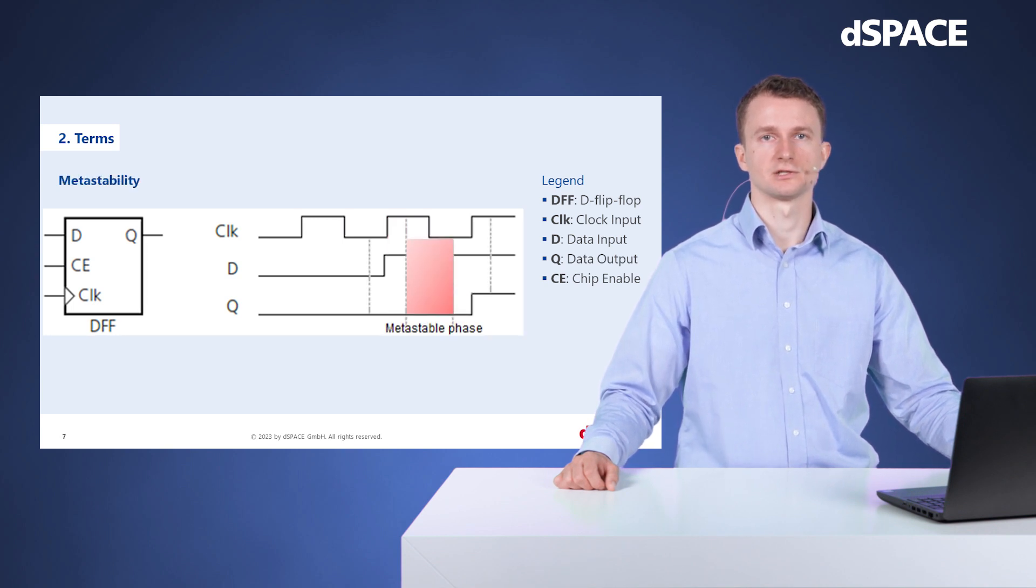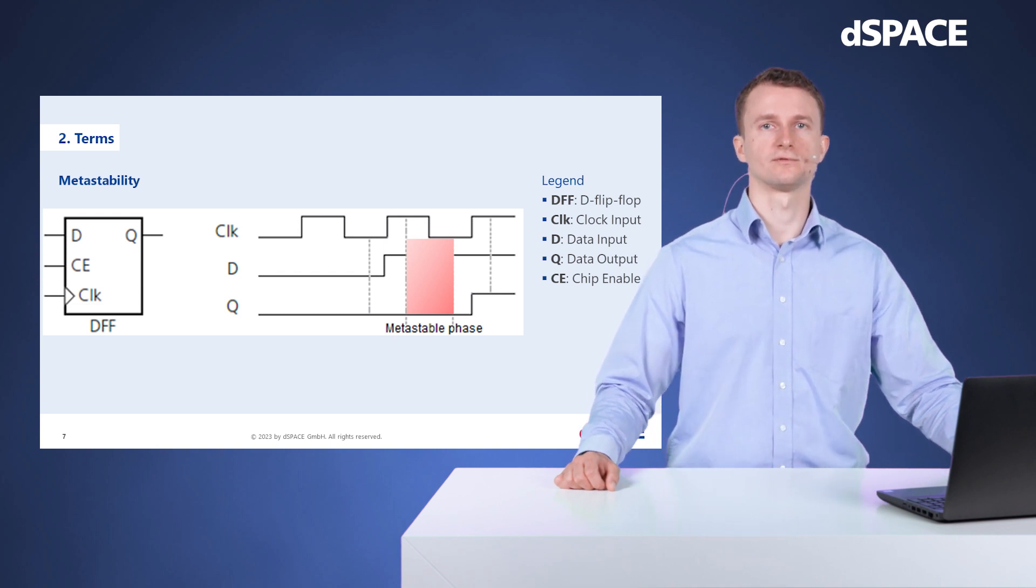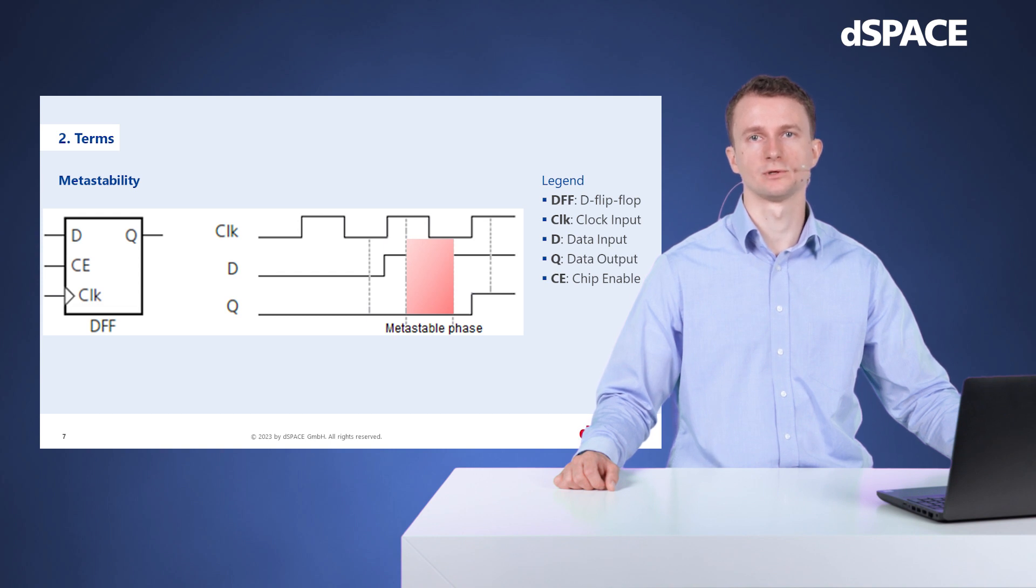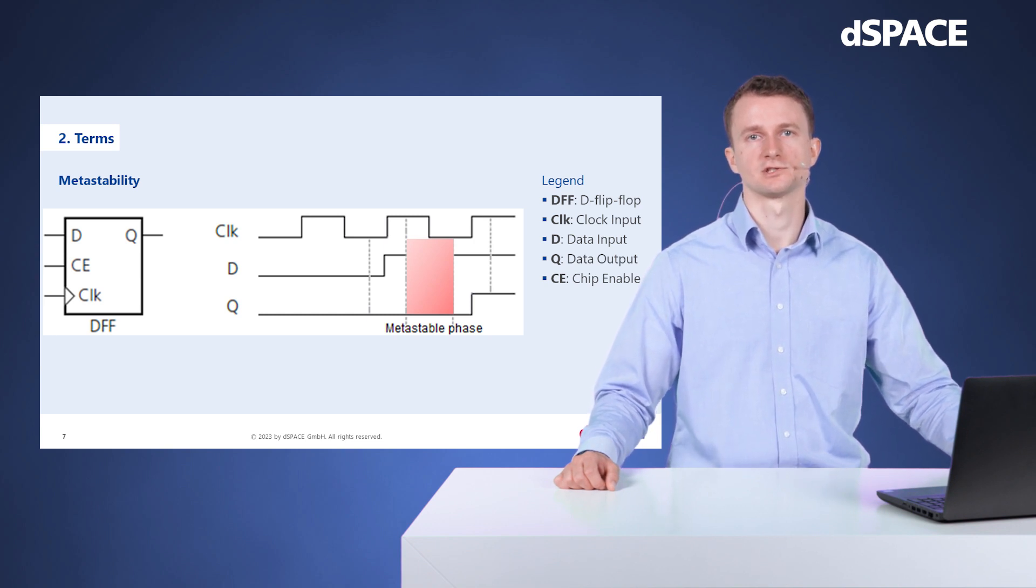FPGA signals are electrical signals that take time to change state. This is critical when the data input signal changes close to the rising edge of the clock signal. To have a reliable output stage, the data input signal must be stable when the clock signal rises from low to high. Otherwise the state of the data output is unknown or can even oscillate, what is called metastability.